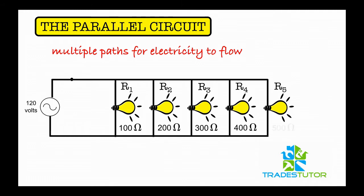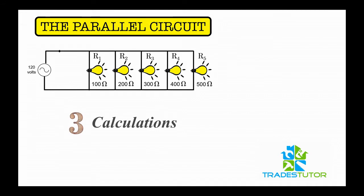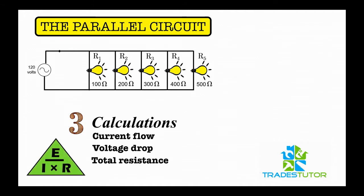All right, let's put that up there. What we're going to do is calculate three things here in the parallel circuit: the current flow, the voltage drop, and the total resistance. Once again, we'll put our little Ohm's law triangle down on the bottom left-hand corner. So first thing, find the current.